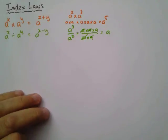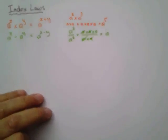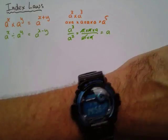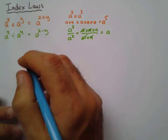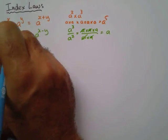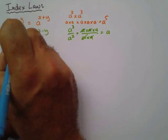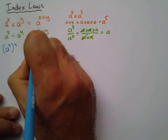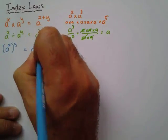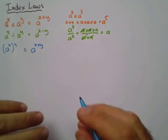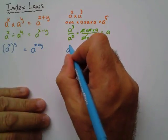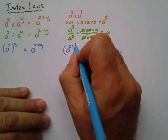Our third rule is if I have a to the power x to the power y, that's the same as a to the power x times y.